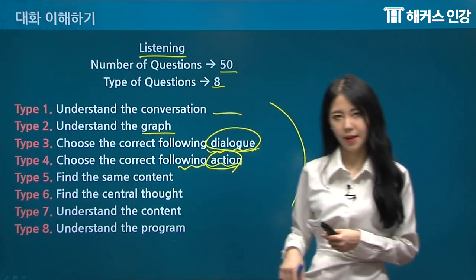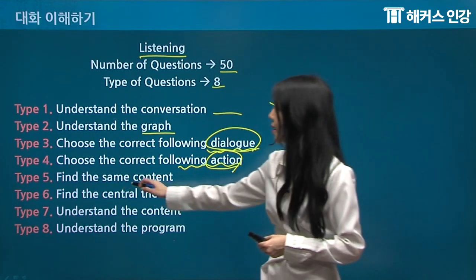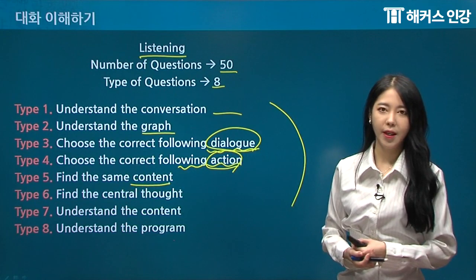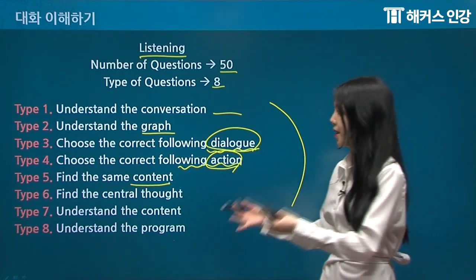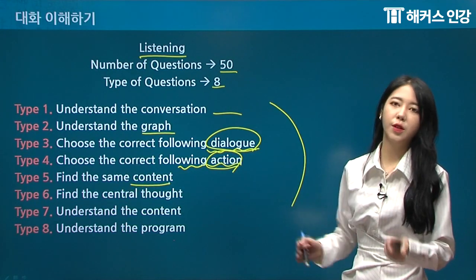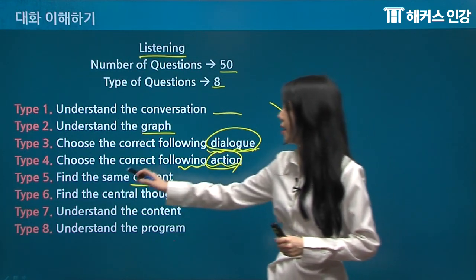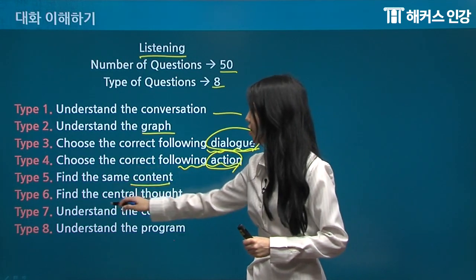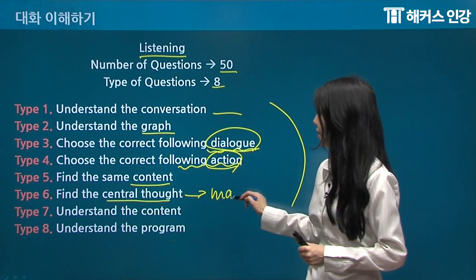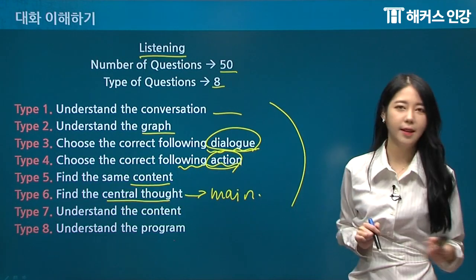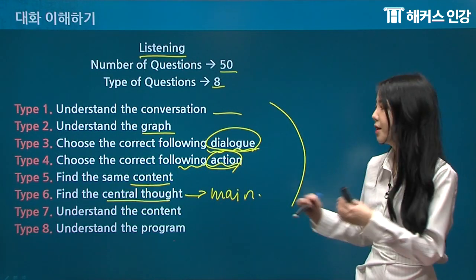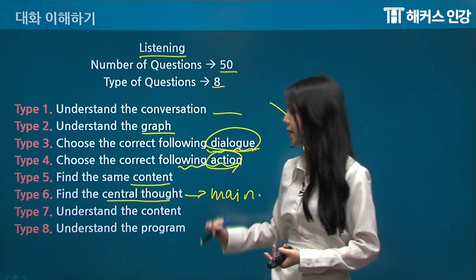Next is type five: find the same content. It's pretty self-explanatory — if they say something, you just have to choose the right matching content. Type six is find the central thought, which is kind of like the main idea: what is the author mainly talking about, what is his or her central thought?